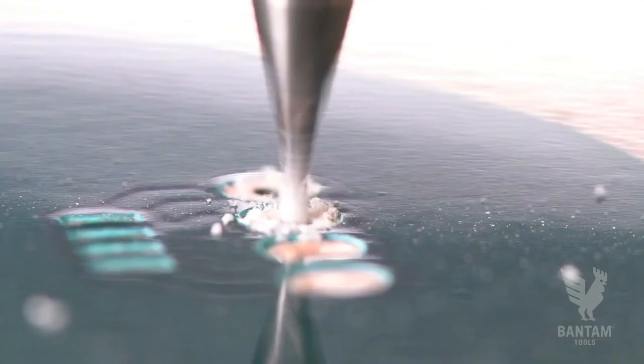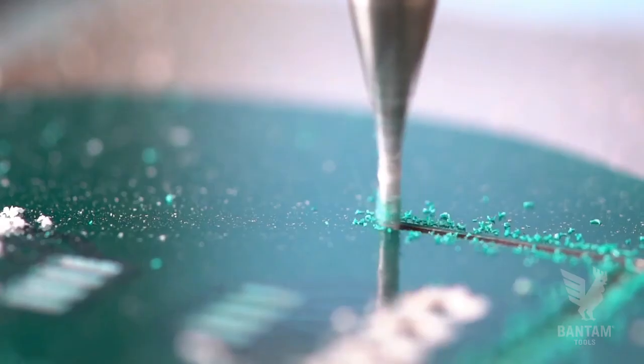Now, with the engraving step successful, finish the board by cutting the holes in the outline. Be sure to disable traces.